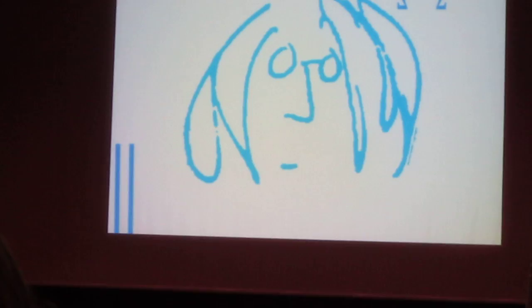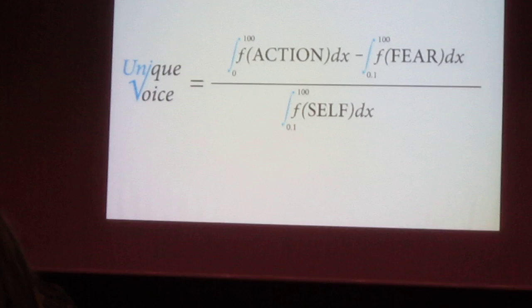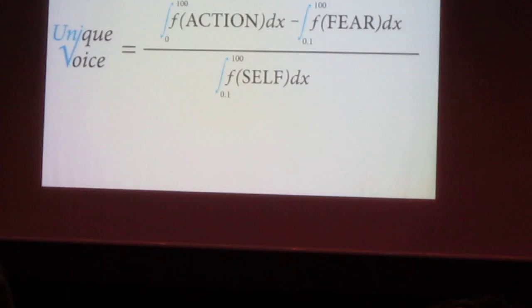What if you could do this? If we look at the first piece of the formula, unique voice, the unique voice is broken like this: it's the function of action minus the function of fear divided by self. It's just some heavy shit. Just go with me though. A little easier, gets easier.